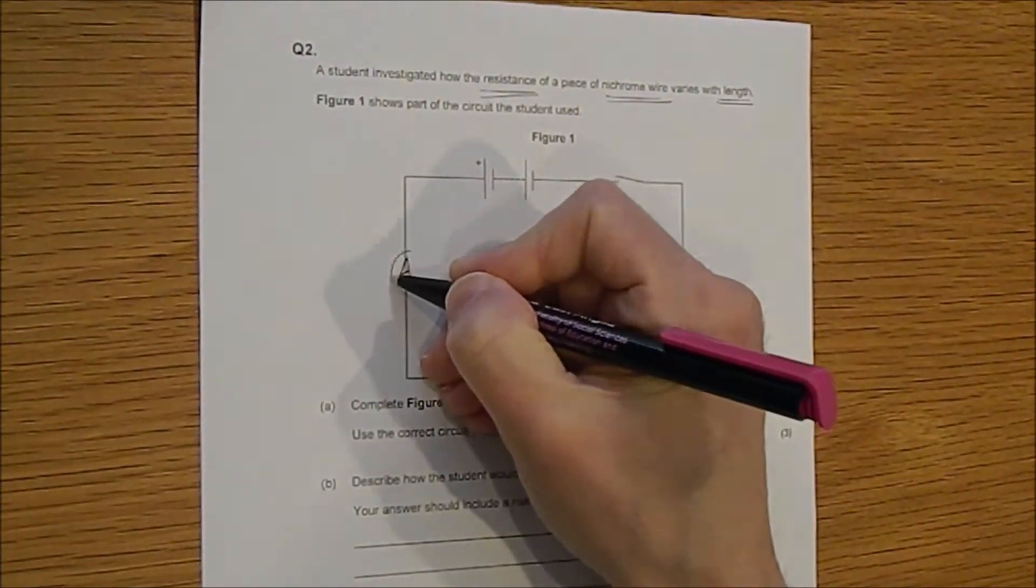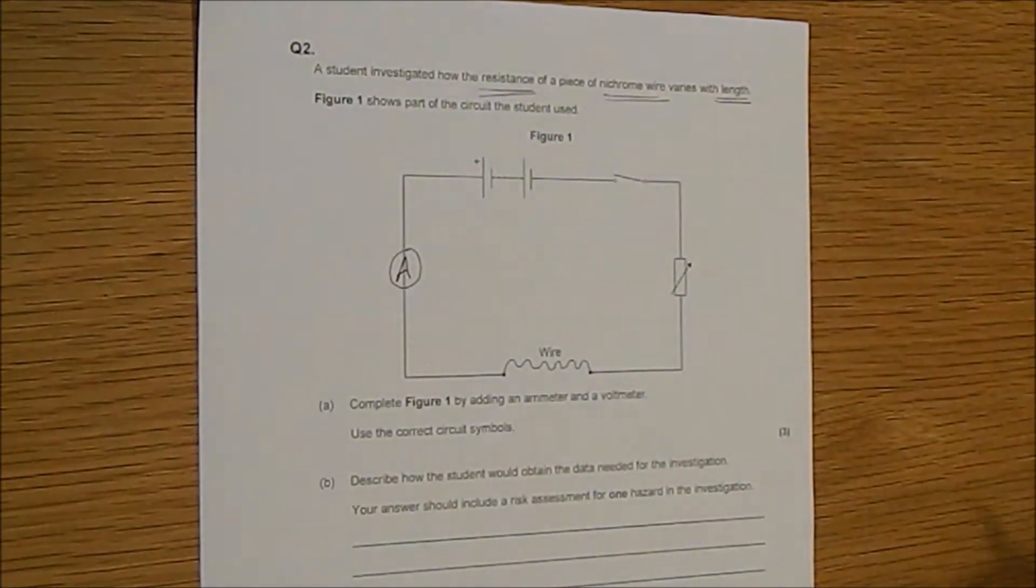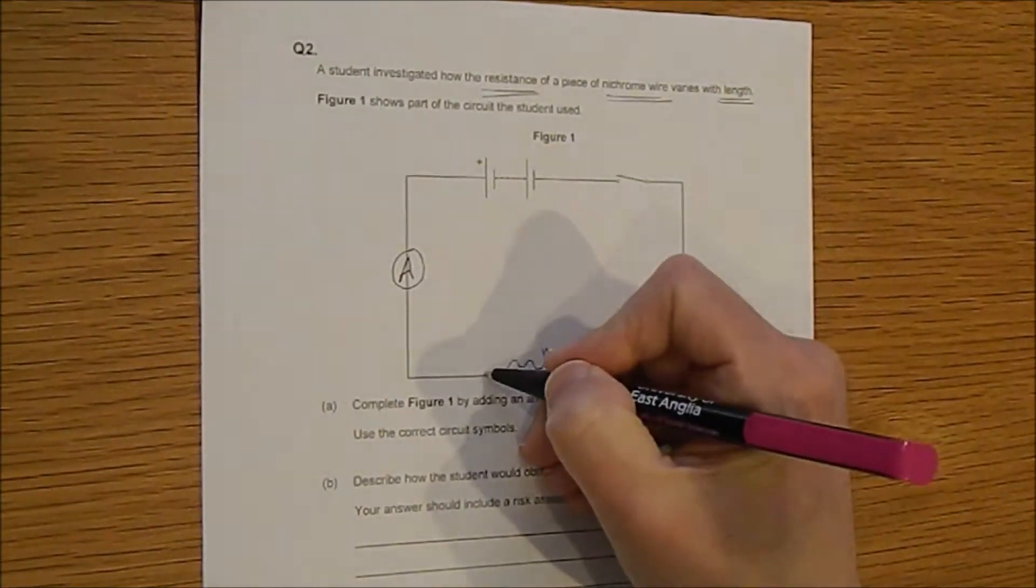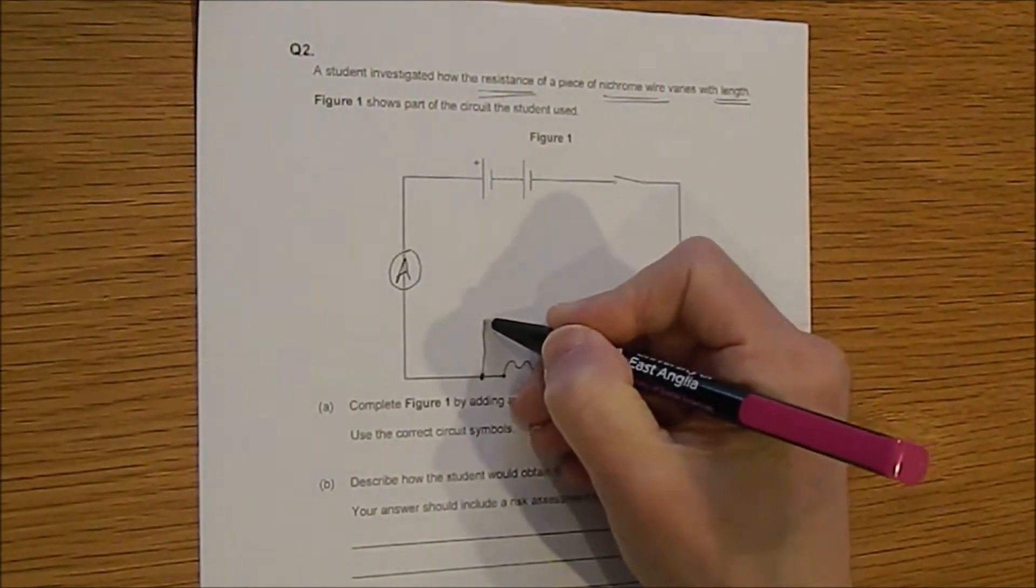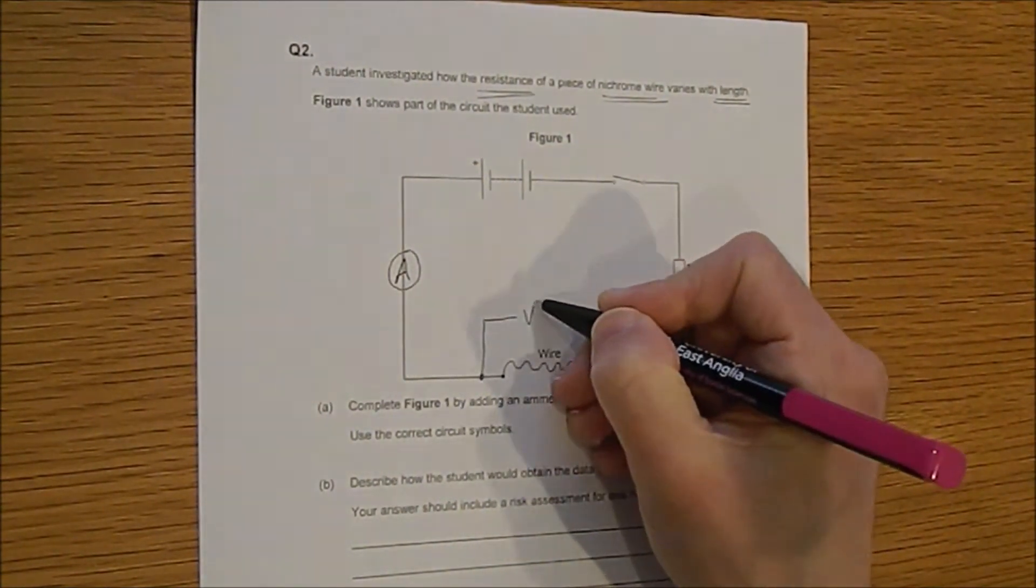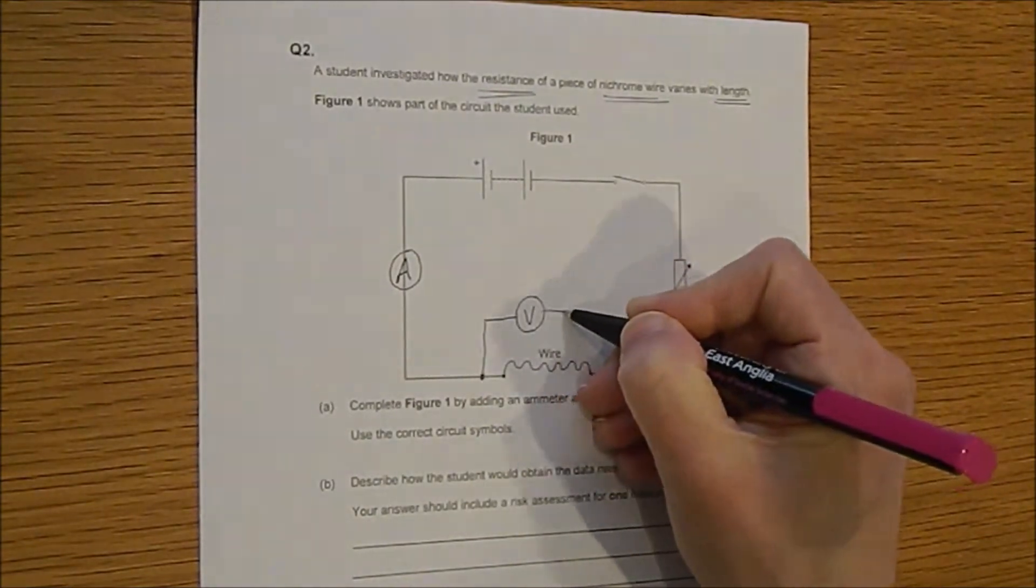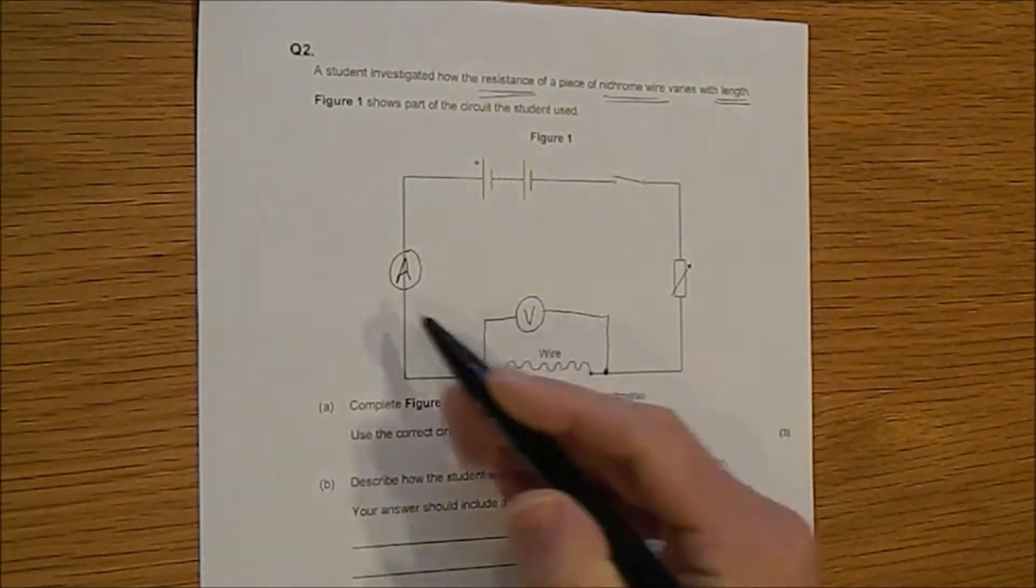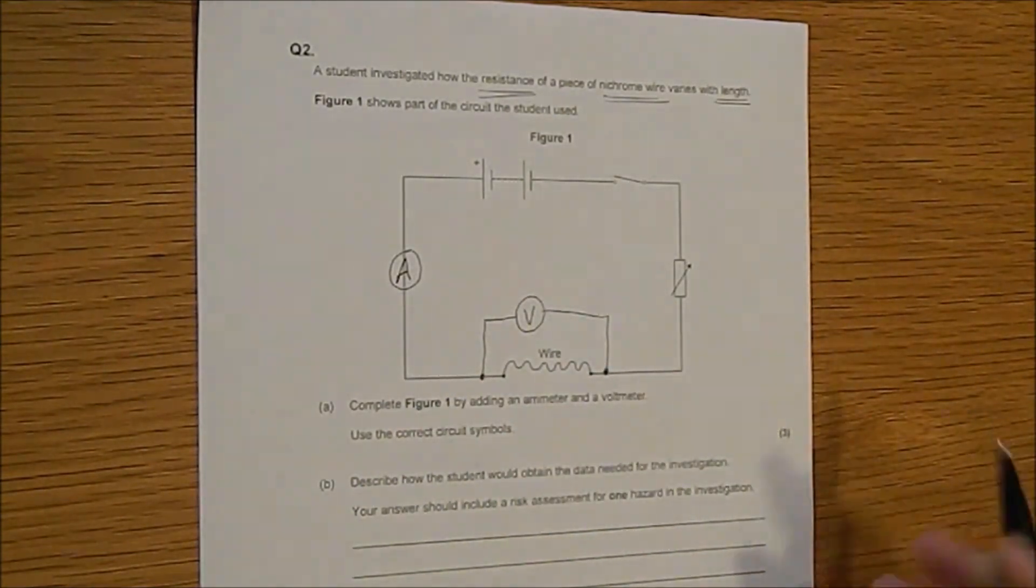It's going to be a capital A inside a circle like that and you need a voltmeter and the voltmeter must go in parallel with the thing that you're measuring which is the wire. So we'll add that in like that. Got your symbols right, you've got the locations right, so that's your three marks.